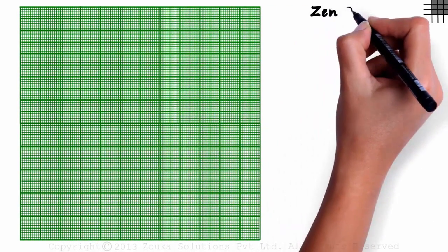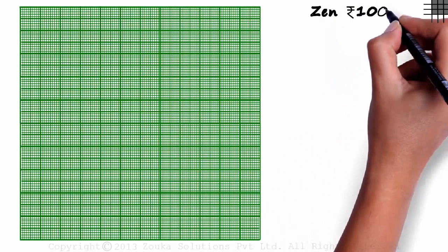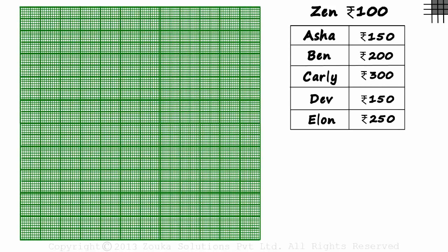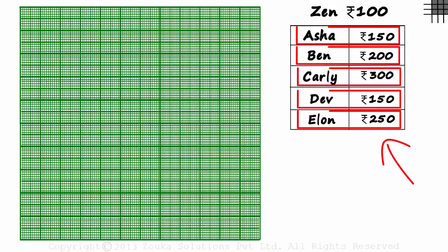Let's try to draw a graph of the example we had seen previously. Zen used to receive a weekly allowance of 100 rupees per week. To convince his dad to increase his monthly allowance, he presented the following data to his dad. These are the weekly allowances of five kids in his neighborhood.